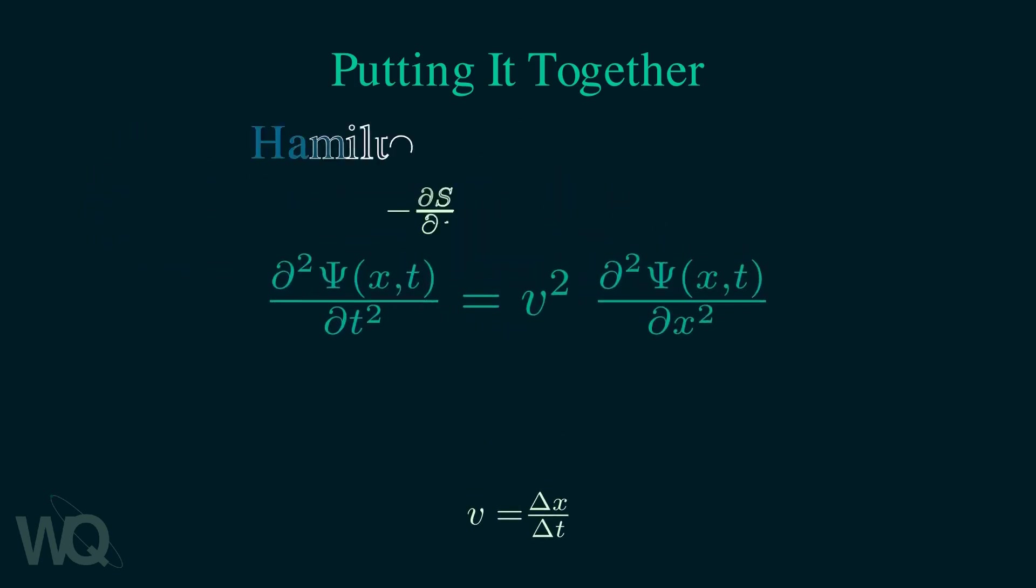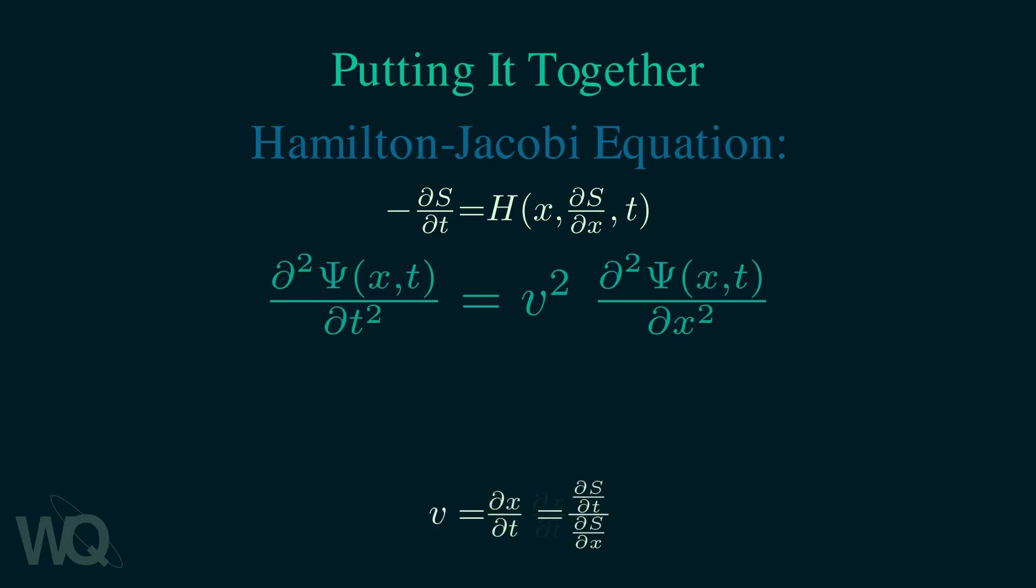Remember that we also have the Hamilton-Jacobi equation where the derivatives of the action are involved. So it might be beneficial to use chain rule to write the velocity in terms of dS/dt. Now we will use the Hamilton-Jacobi equation to find the expressions for not only dS/dt but also for dS/dx.